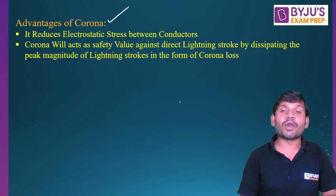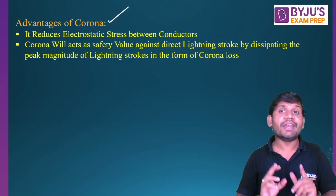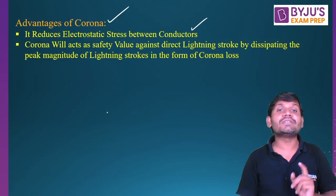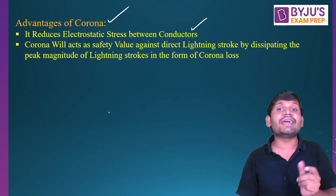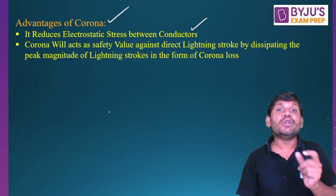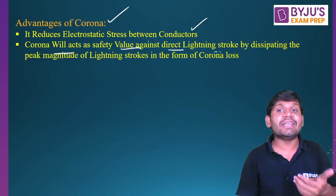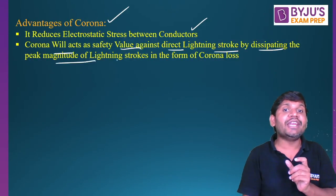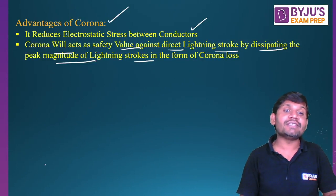What are the advantages of corona? There are many disadvantages due to corona on transmission lines, but there are some advantages as well. It reduces the electrostatic stress between the conductors, because when corona takes place along the line, the effective diameter of the conductor increases. Corona also acts as a safety valve against lightning strokes — if any lightning stroke falls on the line, it dissipates the peak magnitude of the stroke and reduces its severity.